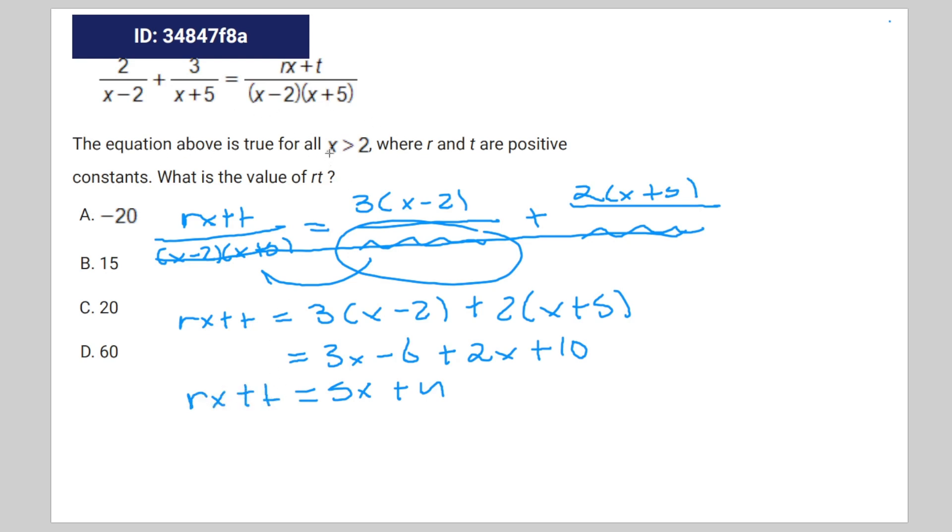In order for an equation to be true for all x, in general, the coefficients of the variables have to be equal to each other, as well as the constants.